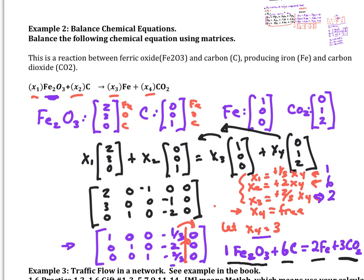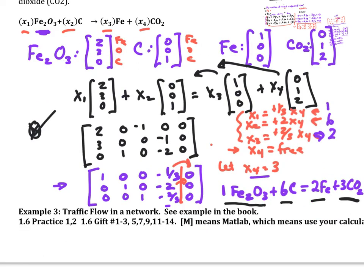So that's chemical reactions — a lot of you have done this before, so it should be quite fun. There's a third example in the book that deals with traffic flow, which I find pretty interesting — you can figure out roundabouts moving in and out of a network, so look at that example. If you see the MATLAB symbol, that means use your calculator to do the augmented matrix solving. Thanks, section 1.6, I hope you have a great day.